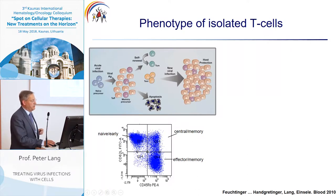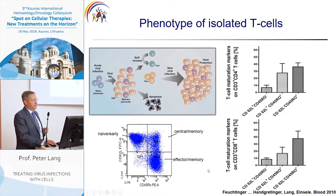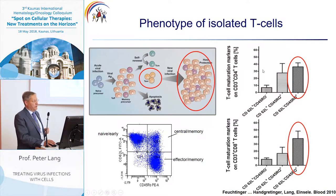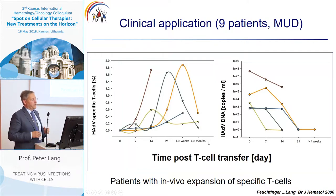Regarding the phenotype of isolated T cells, we need naive T cells, central memory, and effector memory cells. Indeed, in our preparations we find naive cells, central memory T cells which have the capacity for self-renewal, and effector memory T cells which are the effectors of the T cell response.